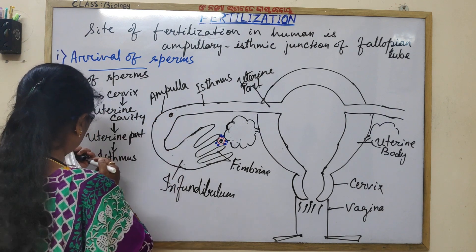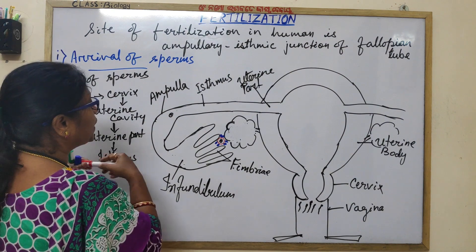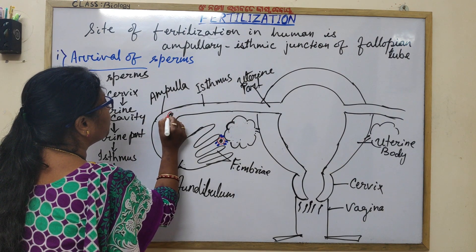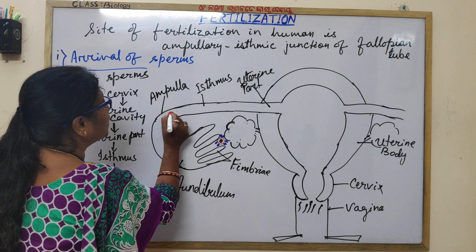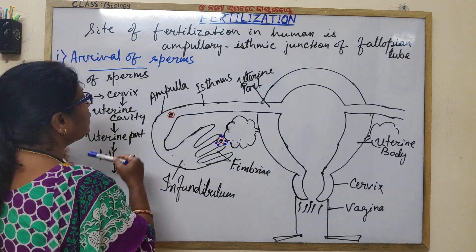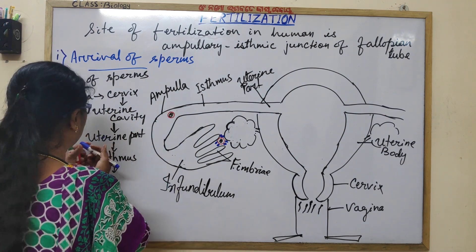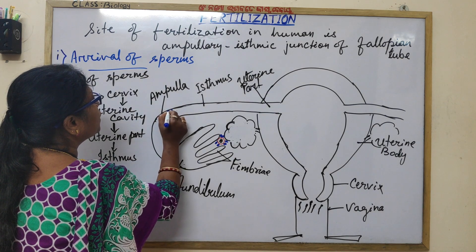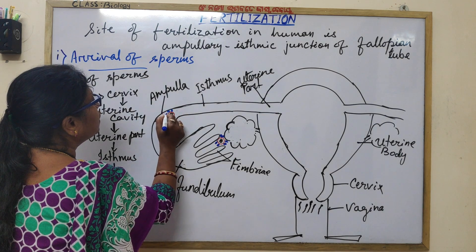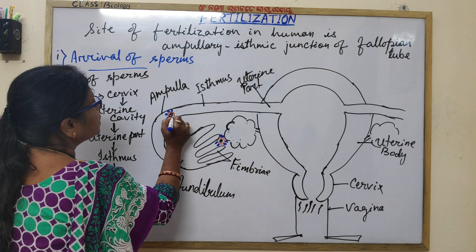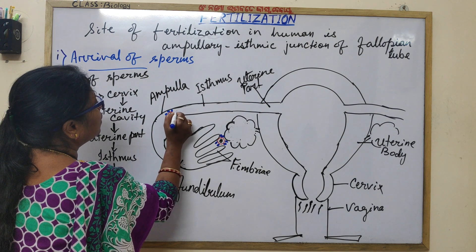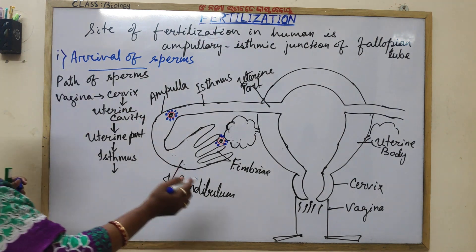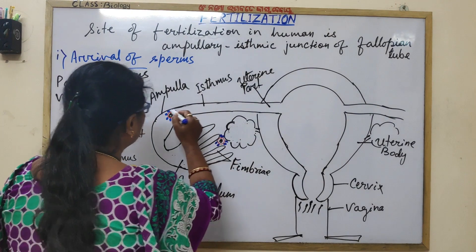At the ampullary-isthmic junction, the ovum is present, surrounded by its two egg membranes: the zona pellucida and the corona radiata, which is made up of elongated, modified granulosa cells. The sperm has to reach here.